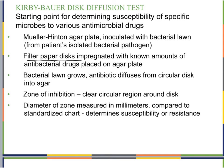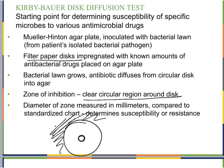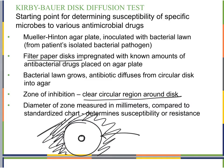We can then see what's called the zone of inhibition — a clear circular region around the disc where no bacterial growth occurs. For example, the disc is in the center, bacterial growth is all around the outside, but there is a clear area with no growth immediately around the disc. That clear area is the zone of inhibition. We measure the diameter — from one end of the circle to the other, straight through the disc — in millimeters.